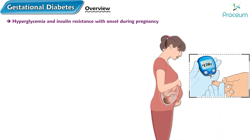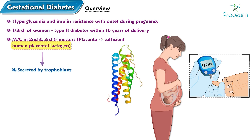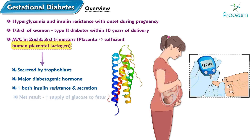Gestational diabetes is characterized by hyperglycemia and insulin resistance with onset during pregnancy. More than one-third of women with gestational diabetes will develop type 2 diabetes within 10 years of delivery. Gestational diabetes is most common in the second and third trimesters when the placenta produces sufficient human placental lactogen. Human placental lactogen is secreted by trophoblasts and is the major diabetogenic hormone of pregnancy, increasing both insulin resistance and secretion, with the net result being an increased supply of glucose to the fetus.